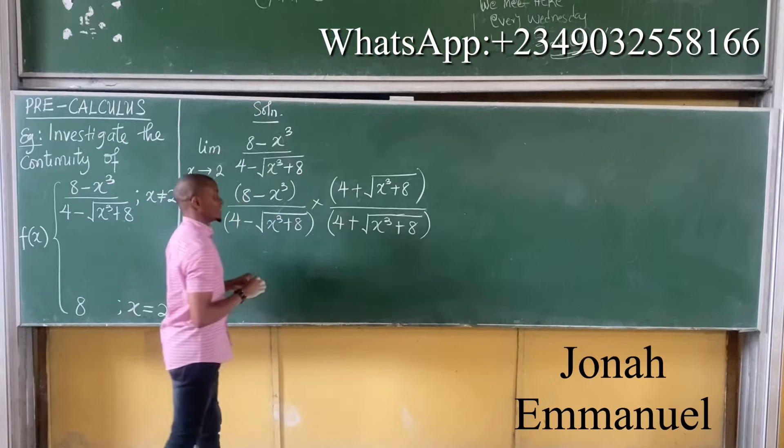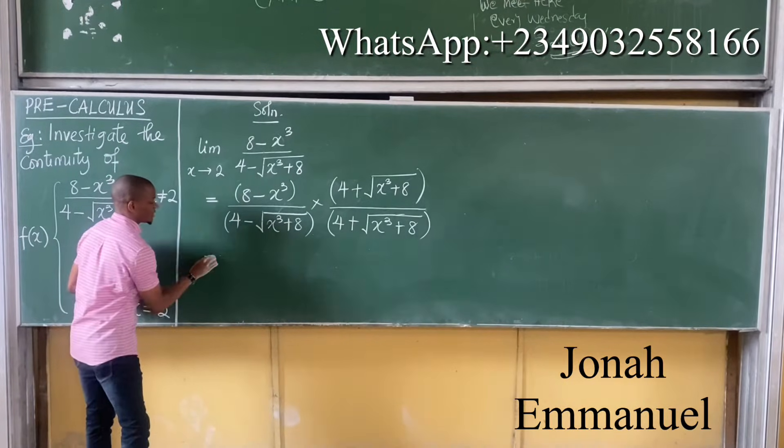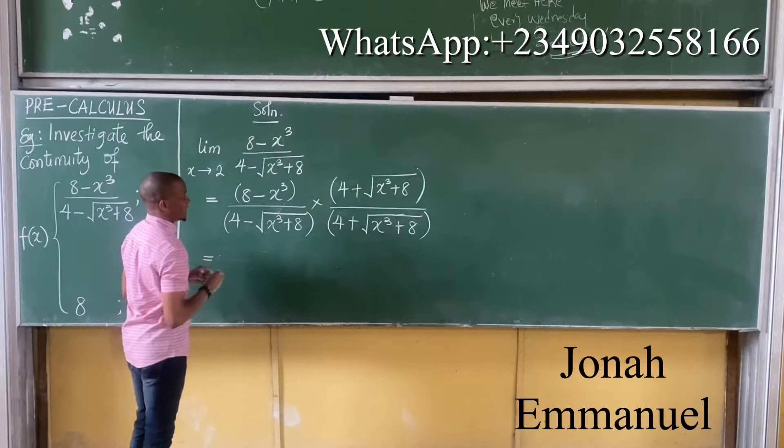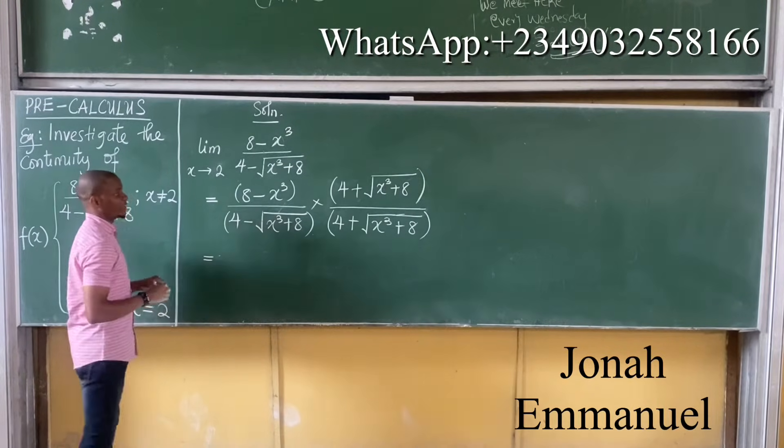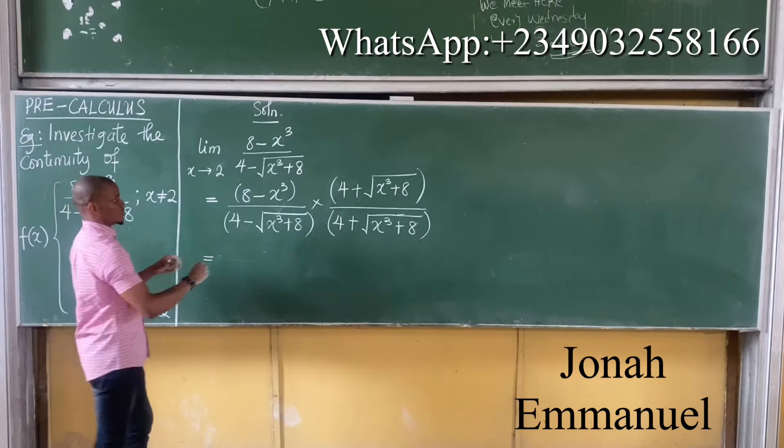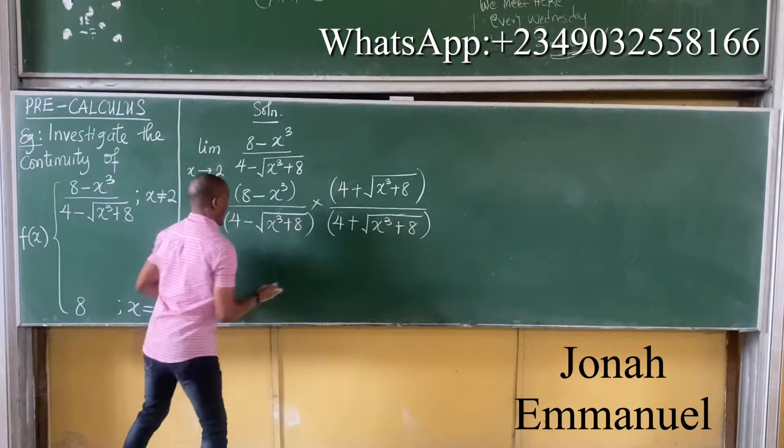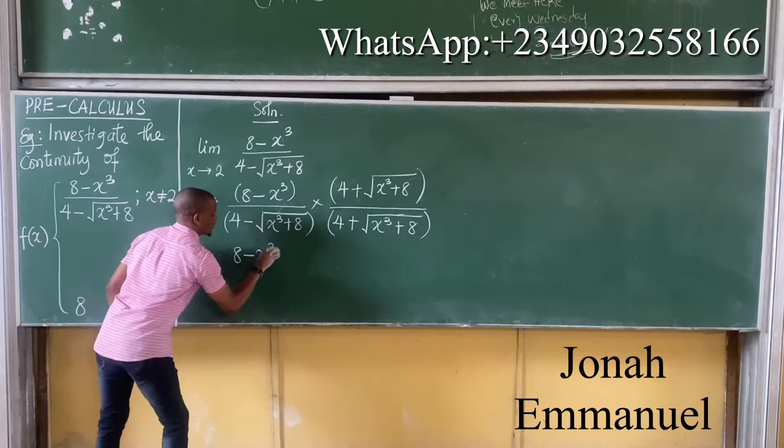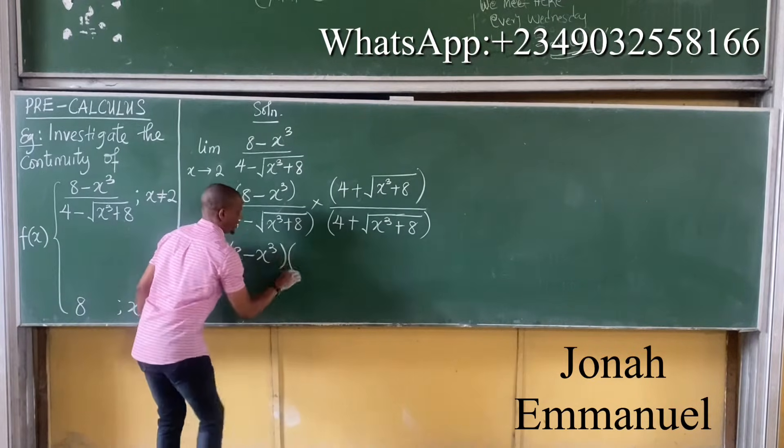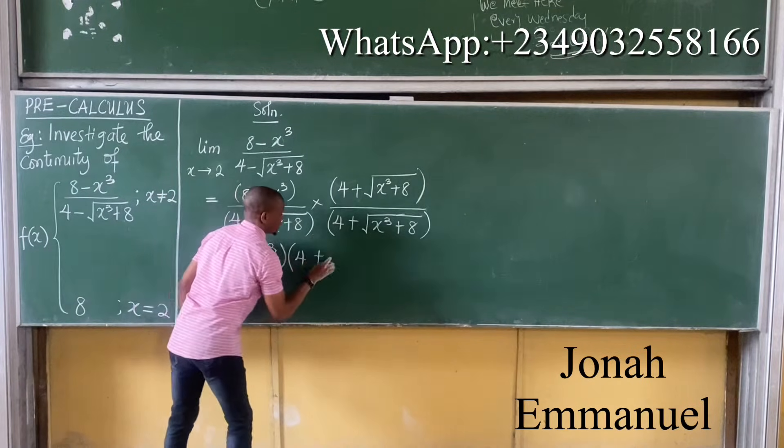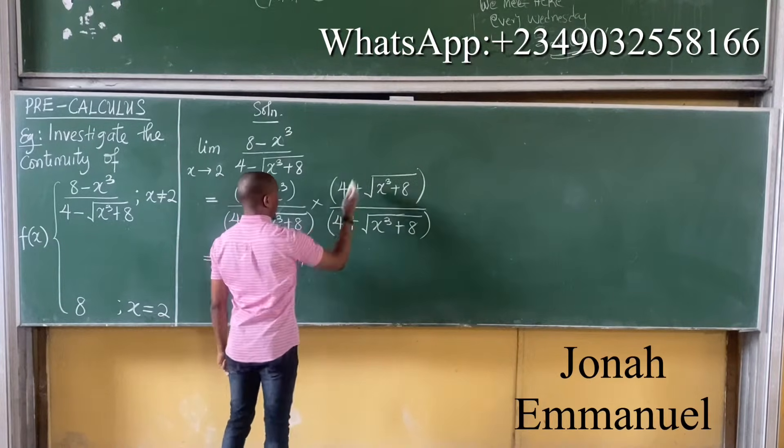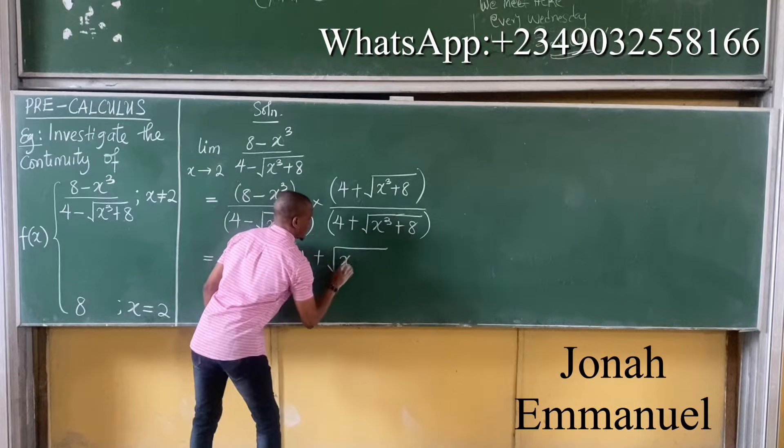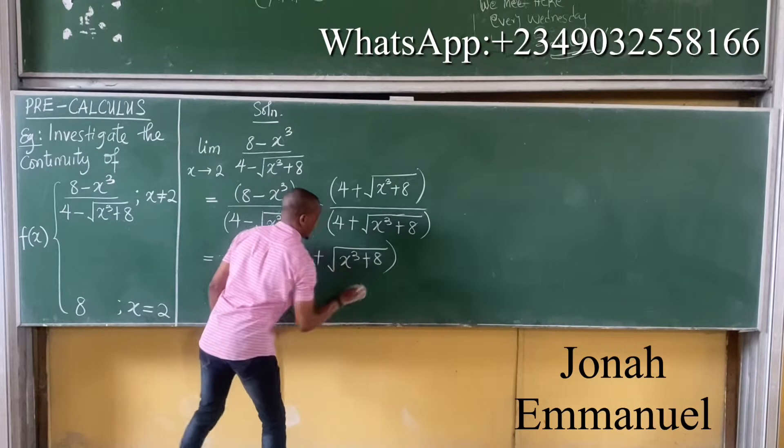So we have this. Alright, let's do something. If you refresh them and multiply, it should be so much. For this one again, I don't have to multiply by the first term. So it becomes 8 minus x cubed, multiply 4 plus the conjugate, the square root of x cubed plus 8. We have this.